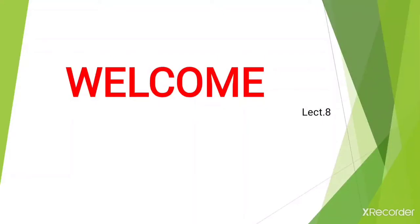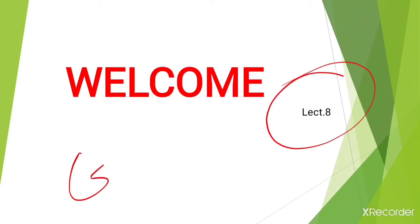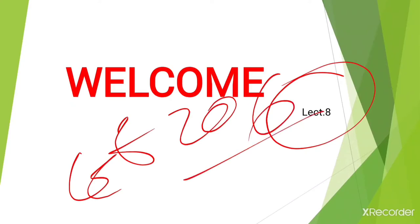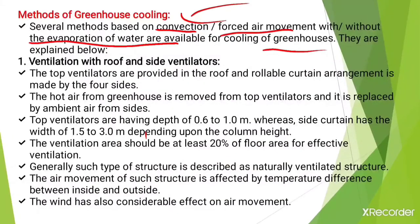Hello students, I am Assistant Professor S.V. Shedai from the Agricultural Engineering Department, and this is lecture number eight. Now let's see the methods of greenhouse cooling. There are several types of methods based on convection or forced air movement, with or without evaporation of water, available for cooling of the greenhouse. Convection is the mode of heat transfer that occurs generally in liquids and gases.